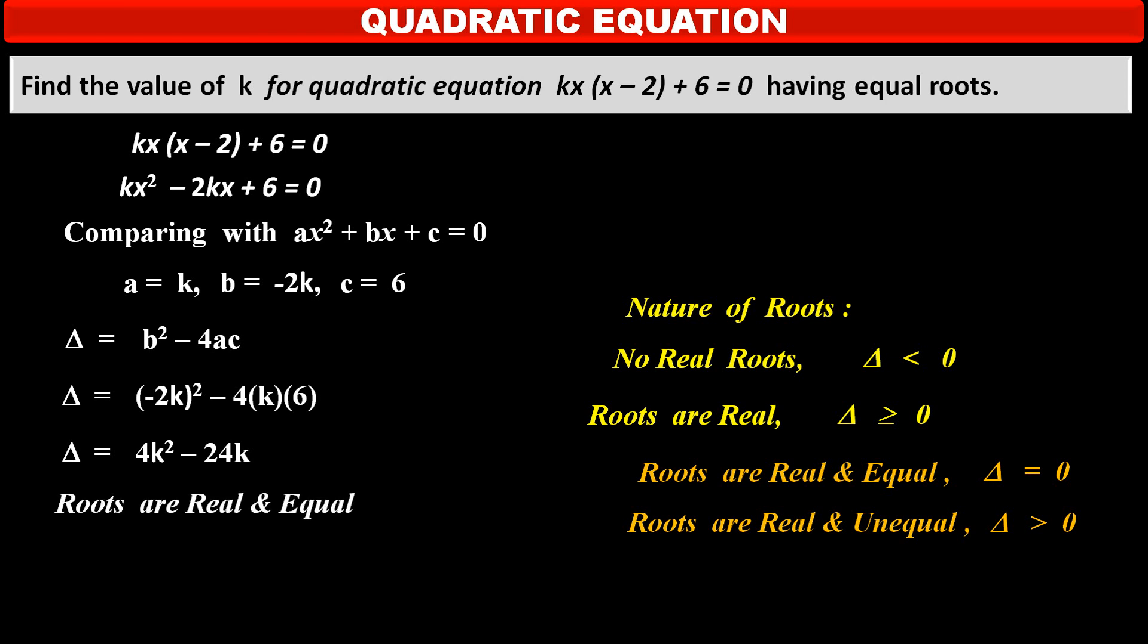It is given that the given quadratic equation has equal roots. Means, roots of this equation are real and equal. Therefore, value of discriminant delta is equal to 0.